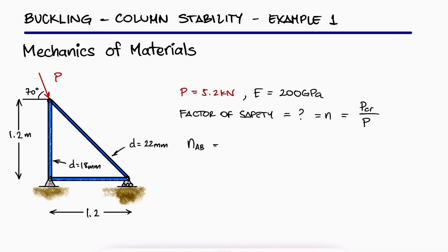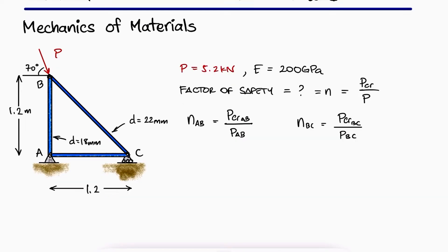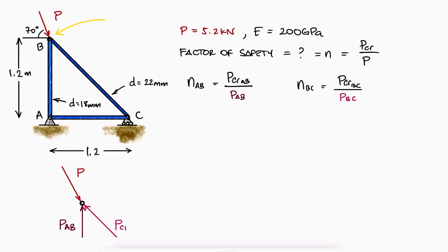We can calculate a factor of safety for member AB and one for member BC. The actual loads that go into members AB and BC can be found by using the method of joints at location B.